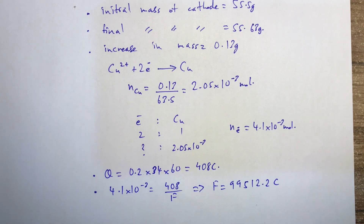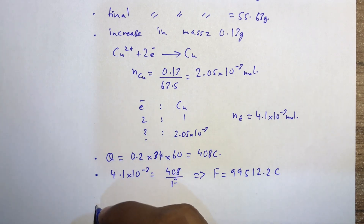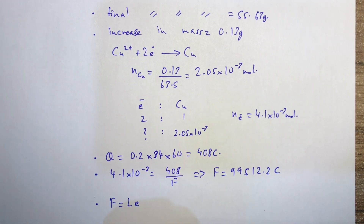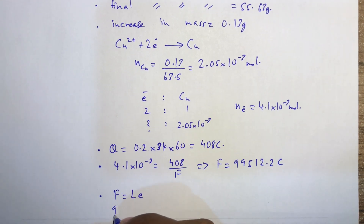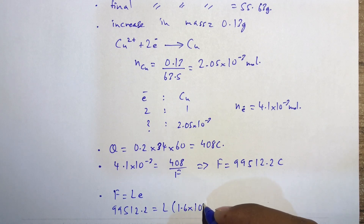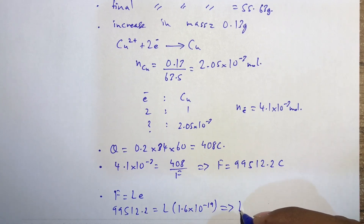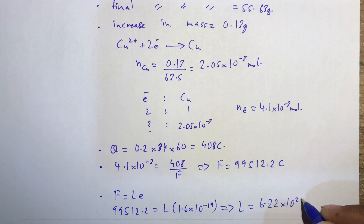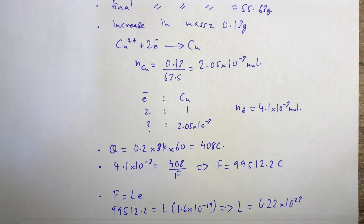Now using F = Le, where F is Faraday's constant, L is Avogadro's constant, and e is the charge of an electron (1.6 × 10⁻¹⁹ C), we can find the experimental value of Avogadro's constant. The value won't be exact because of experimental errors, but this is how you do an experiment to calculate the value of Avogadro's constant.